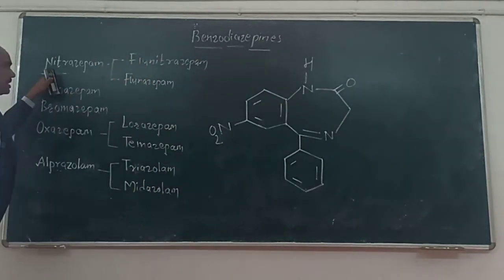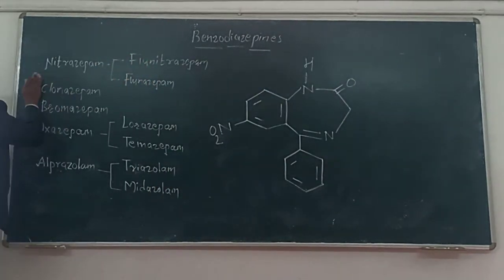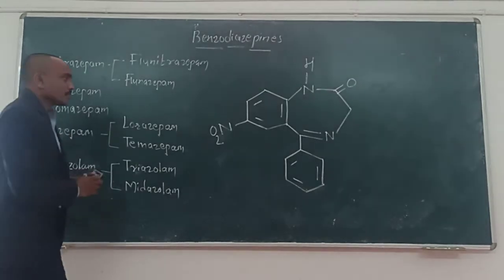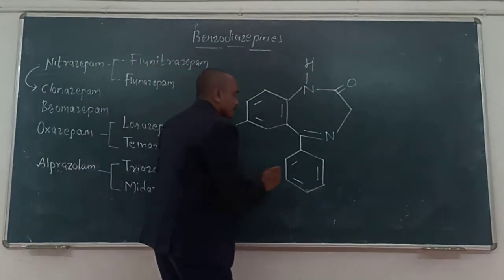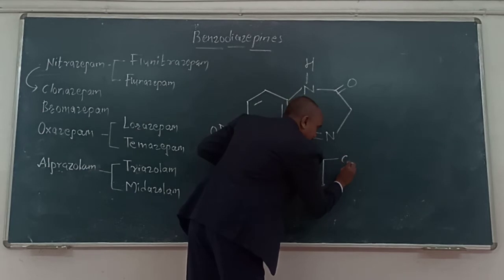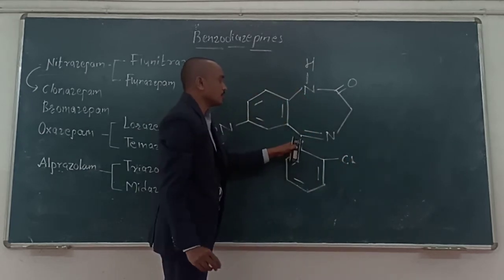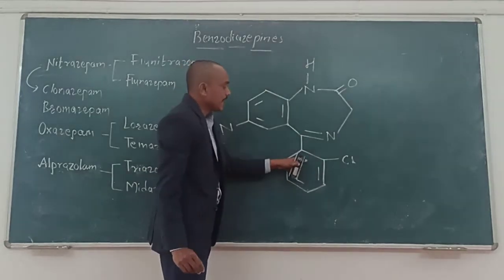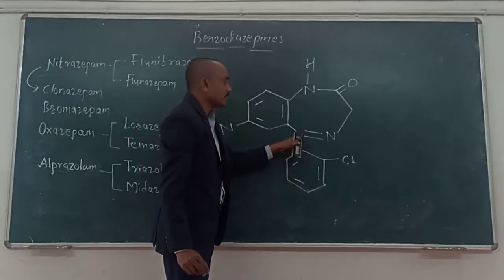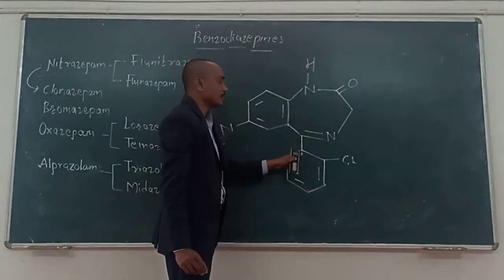Once we have the nitrazepam, we can prepare the structure for clonazepam. Here, it contains the presence of chlorine at the second position of the phenyl ring, which is substituted at the fifth position of the 1,4-benzodiazepine.